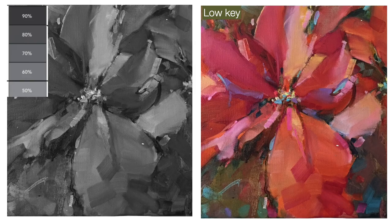Here's a painting I also did a few years ago that is a low-key painting. You can see that all of the values are pretty much in that darker area of the value scale, with just some lighter bits really in the middle and upper-middle range. It makes for a very moody or dramatic painting — you can envision a nocturne done this way. It's a really quite lovely effect either way you go.